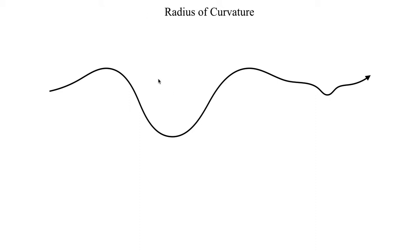If you look at any atmospheric flow pattern, you'll know that some flow patterns aren't perfectly circular. In fact, the vast majority of flow patterns aren't perfectly circular. So that raises the question: how do we diagnose those flow patterns that are curved but not perfectly circular? That's where the concept of radius of curvature comes into play.